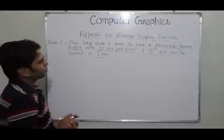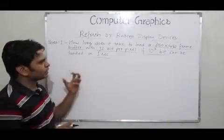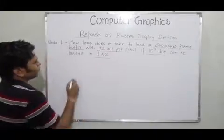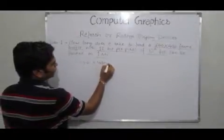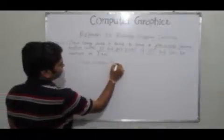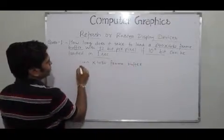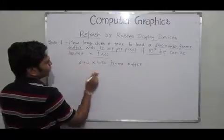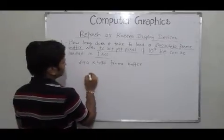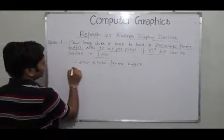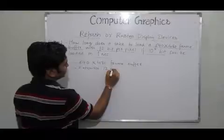First, let us write down the data given to us. We have a 640 by 480 frame buffer, and this frame buffer requires 12 bits per pixel.